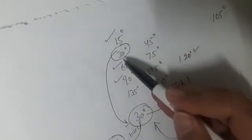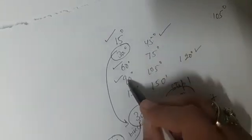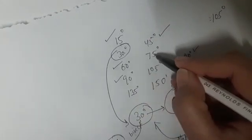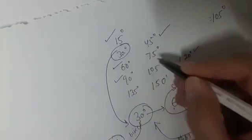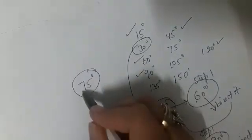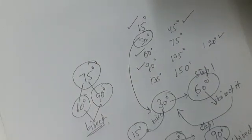Coming back to the full list: 15° is bisector of 30°; 30° is bisector of 60°; 45° is bisector of 90°; 105° we have seen. For 75°: construct 60° and 90°, then bisect — you get 75°.